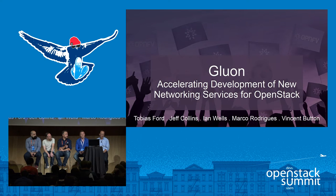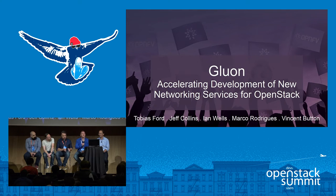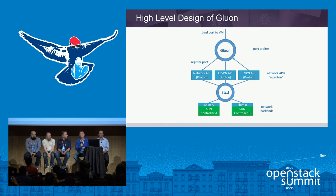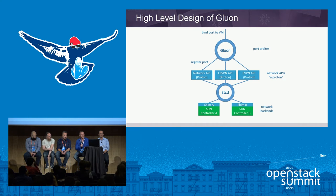It wasn't very long ago when we were just talking about Gluon for the first time, and now it's a real thing. Jeff, can you tell us what it is exactly? Gluon is a port arbiter. We're on our second iteration of a different implementation. When the bind request comes in from Nova, it's Gluon that's responding with that port-to-VM bind request.